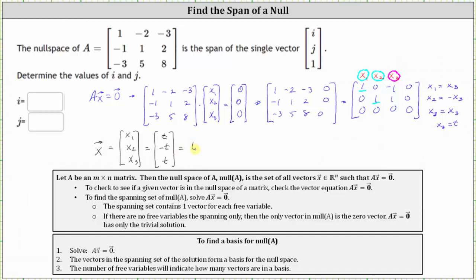If we factor out the t, we have t times the vector one, negative one, one. So the vector one, negative one, one forms a basis for the null space of A, which means it spans the null space of A. And comparing this vector to the vector we're looking for where the components are i, j, one, notice how the third component is one in both vectors. Therefore we know i is equal to one and j is equal to negative one.